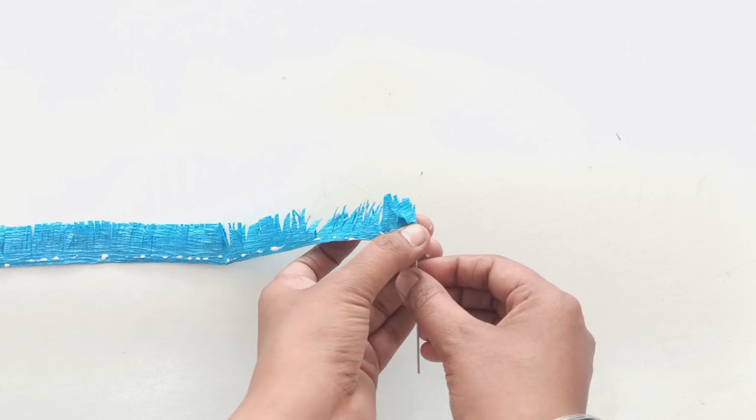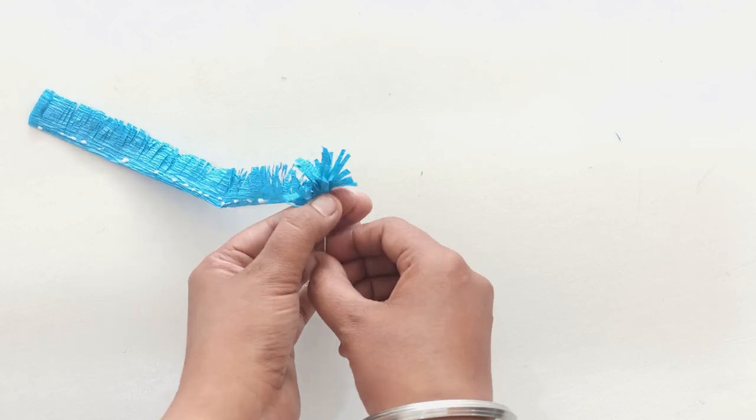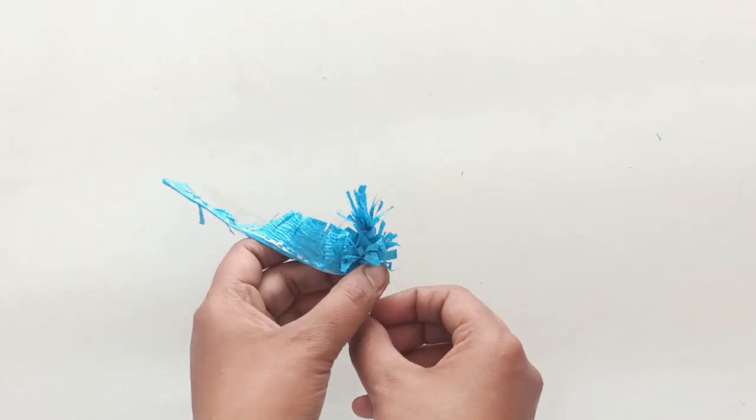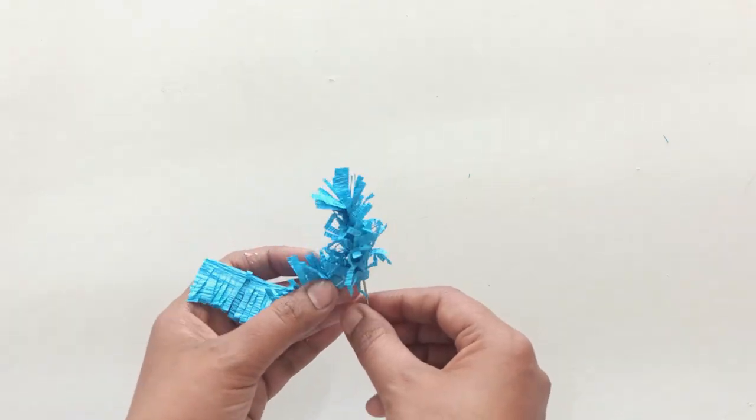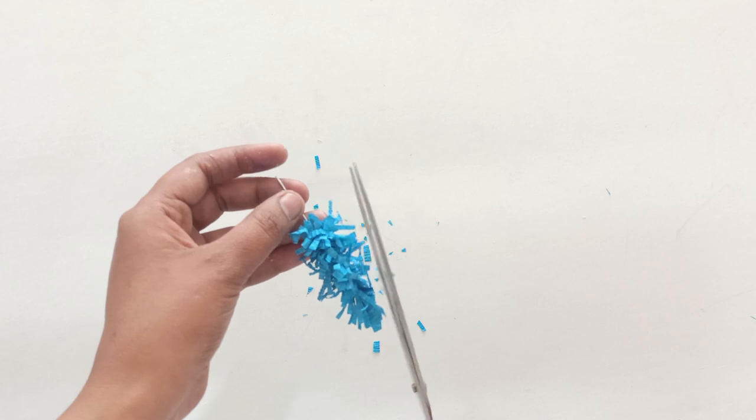Take some craft wire, add glue to the tip and wrap the paper around the wire winding down. You can use your scissors to trim it into a tree shape.